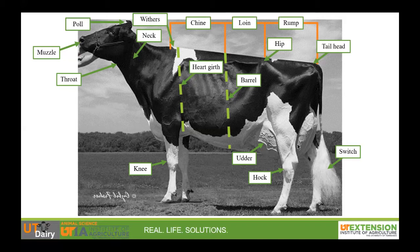Cows have four hooves and you may be asked to identify any of them. The hoof is the hard structure cows walk on and grows kind of like our fingernails do. Finally we'll label the dewclaw. These are also on all four legs.